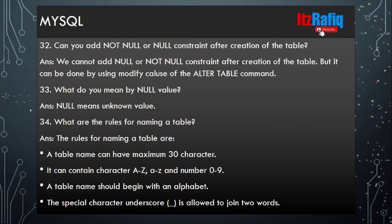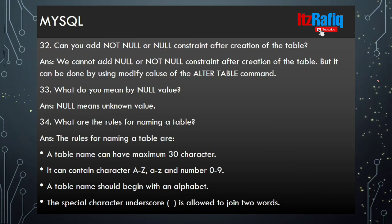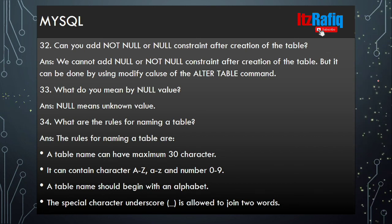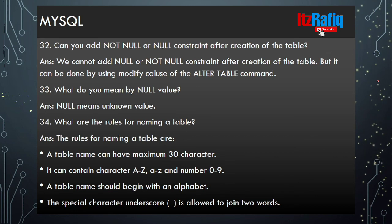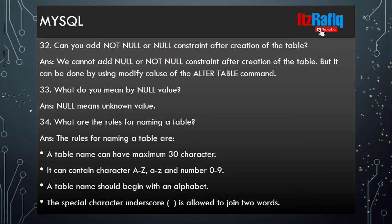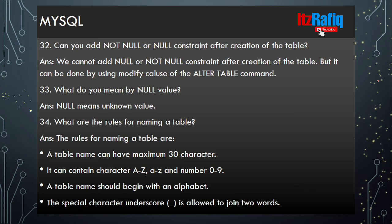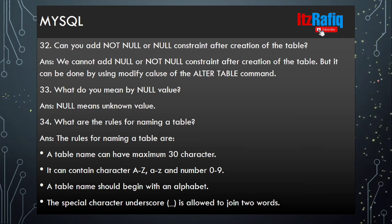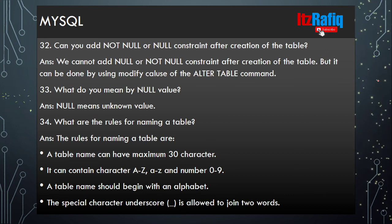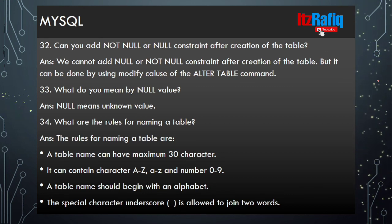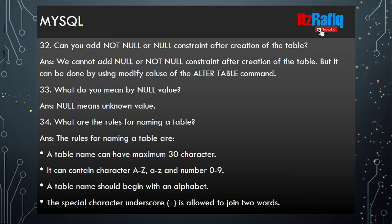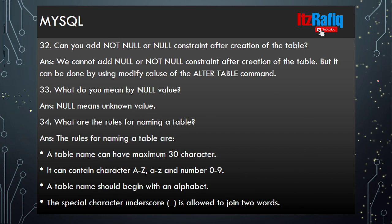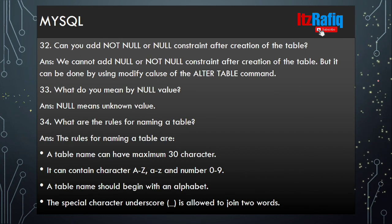What are the rules for naming a table? A table name can have a maximum of 30 characters. It can contain characters A to Z (capital and small) and numbers 0 to 9. A table name should begin with an alphabet. The special character underscore is allowed to join two words. It cannot have any spaces in between, and it cannot have any reserved words like CREATE, ALTER, or DROP.